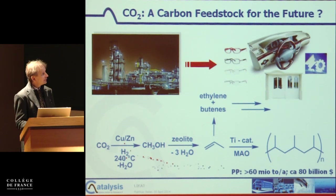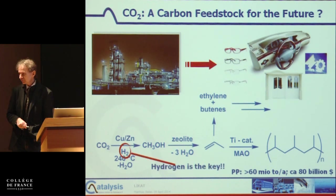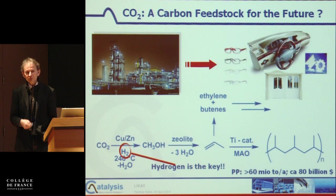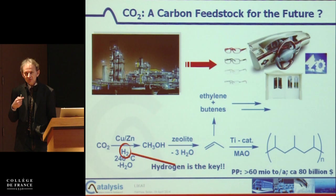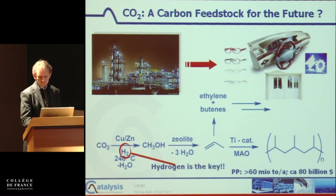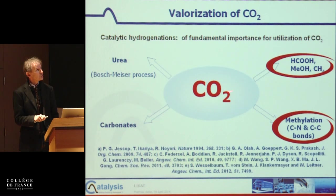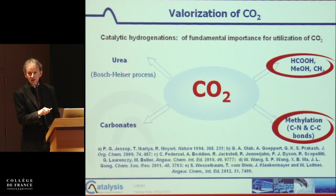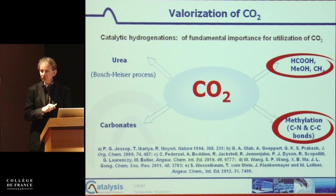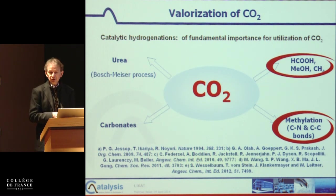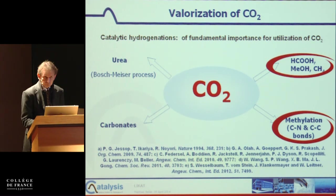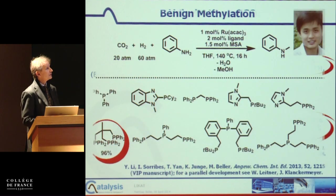Why is it not done? We don't have the reductants. The reduction of carbon dioxide, which you have seen for energy purposes, is also the requirement for a fully sustainable chemical industry. Today carbon dioxide is mainly used in the chemical industry for making urea, but also for carbonates, and there are further things to develop.